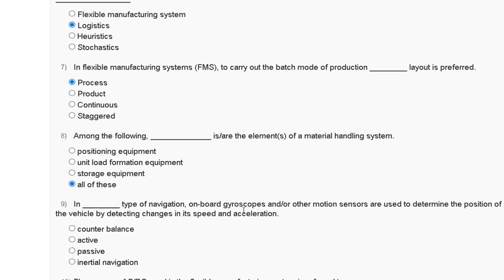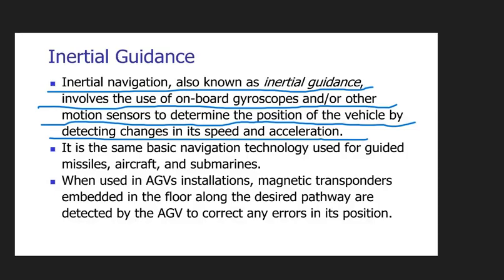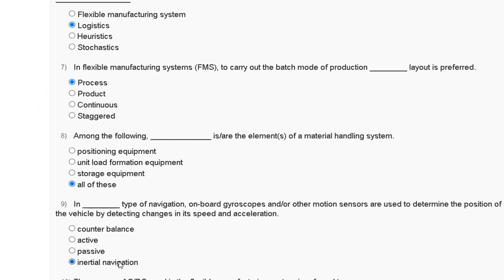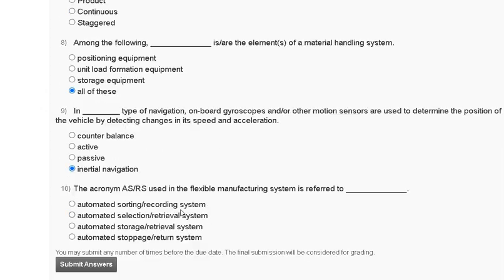Question number nine: in dash type of navigation, gyroscopes and other motion sensors are used to determine the position of the vehicle by detecting changes in its speed and acceleration — first, counterbalance; second, active; third, passive; fourth, inertial navigation. Inertial navigation, also known as inertial guidance, involves the use of onboard gyroscopes and other motion sensors to determine the position of the vehicle by detecting changes in its speed and acceleration. So the correct answer to question number nine is option D — inertial navigation.